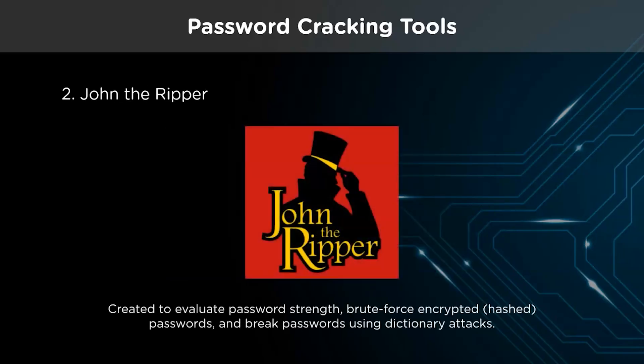John the Ripper is a password cracking application that was first released in 1996 for Unix-based computers. It was created to evaluate password strength, brute force encrypted hashed passwords, and break passwords using dictionary attacks. It can use dictionary attacks, rainbow tables, and other attacks depending on the target type.